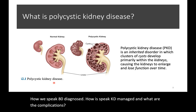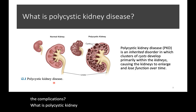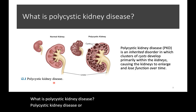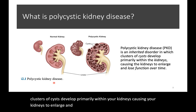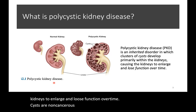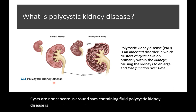Polycystic kidney disease, or PKD, is an inherited disorder in which clusters of cysts develop primarily within your kidneys, causing your kidneys to enlarge and lose function over time. Cysts are non-cancerous, round sacs containing fluid. Polycystic kidney disease is one of the major causes of chronic kidney disease, or end-stage renal disease.